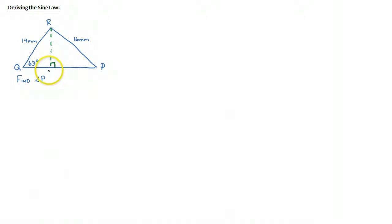If we add another letter here, let's call this W, we see that triangle QRW has both an angle measurement, other than the 90 degrees, and a length, which means I can solve for this height here. And once I've solved for this height here, I can use that height in combination with the 16 millimeters to solve for P.